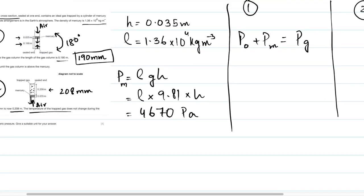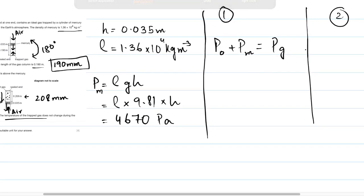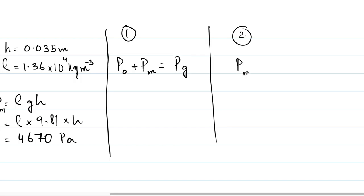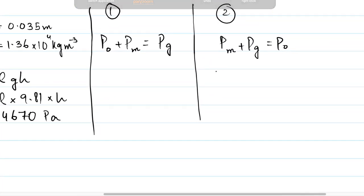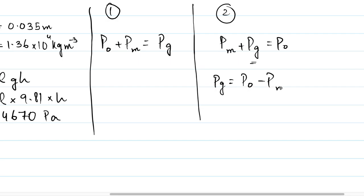In situation two, after inverting the whole thing, mercury is opposing — mercury is exerting pressure in the same direction as the gas, opposing the atmosphere. So pressure due to mercury plus pressure of gas equals atmospheric pressure. Making pressure of gas the subject: pressure of gas equals atmospheric pressure minus pressure due to mercury. I'll call this equation B, and the previous one equation A.